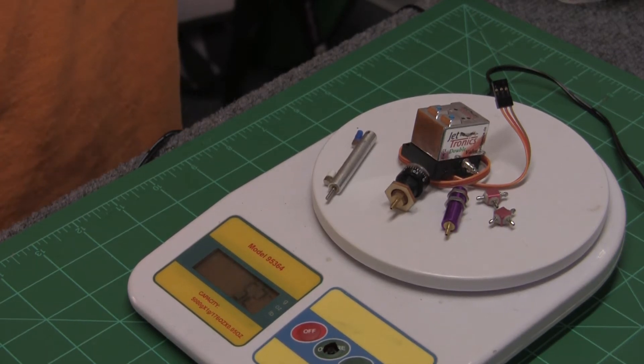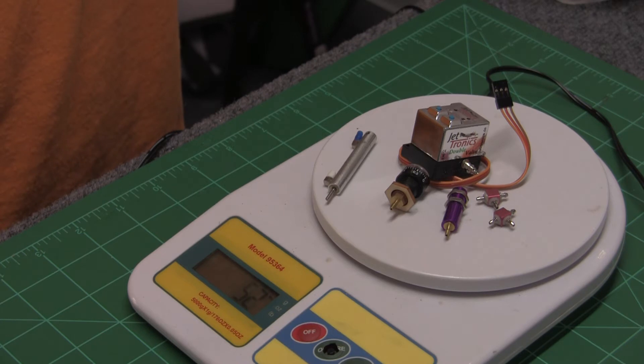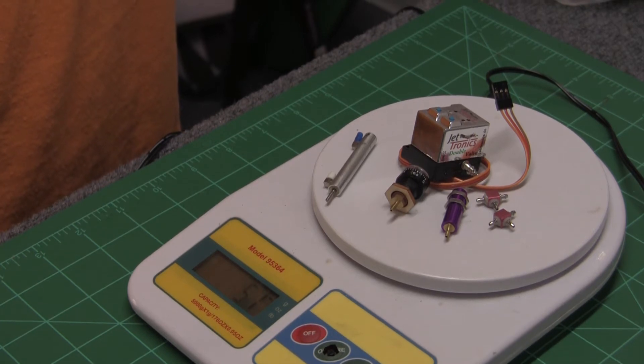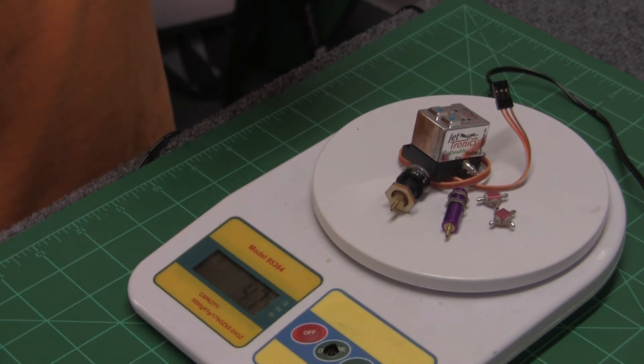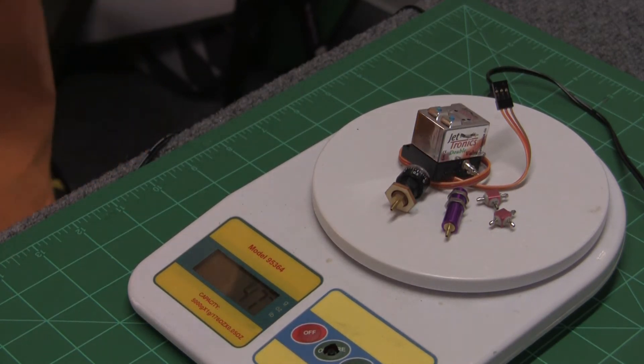But I mean, if you have your typical gear door setup, you could easily still save money. And weight, which is a good thing. You always want to save weight. Everything flies better when it, the lighter it is in my opinion, but that's just my opinion.